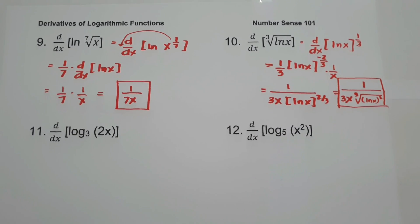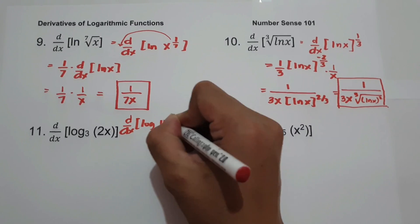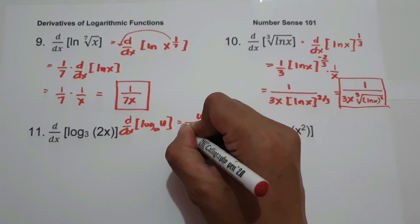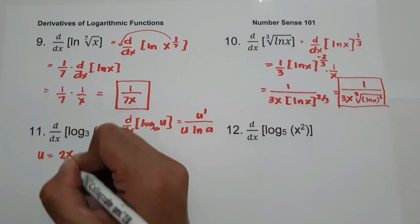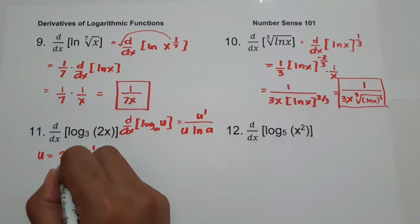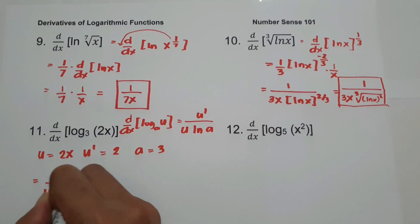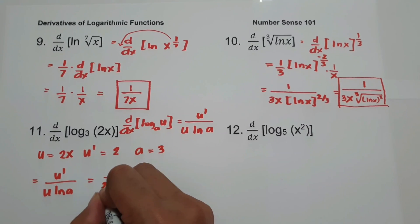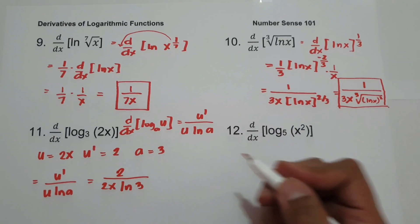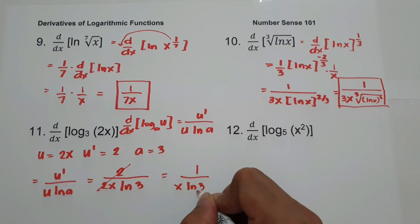Number eleven: derivative of log base 3 of (2x). Using the formula u' over (u · ln a): let u = 2x, u' = 2, and a = 3. Substituting gives 2 over (2x · ln 3). We can cancel 2, leaving 1 over (x · ln 3). This will be our final answer.